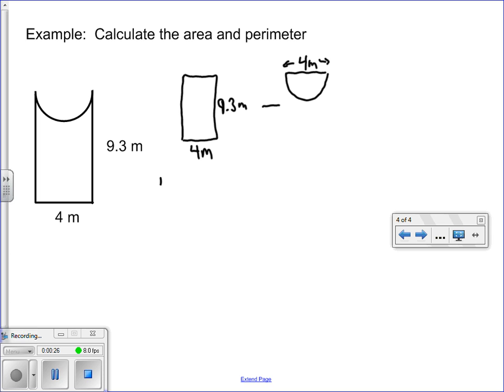So in order to find the area, what we need to do is find the area of shape 1, which is a rectangle, and subtract the area of shape 2, which is a semicircle.